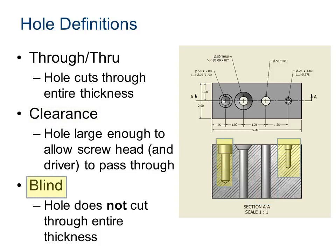A blind hole is a hole that does not go all the way through the part. So, you look up here on the top, and you can see that there's a hole there. But if you were to look at the bottom of this part, it would not go all the way through. Okay? That's a blind hole.